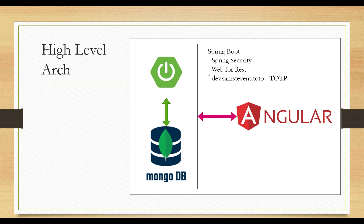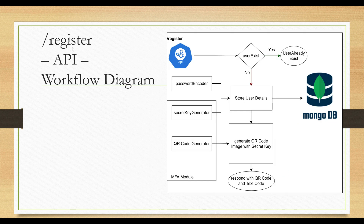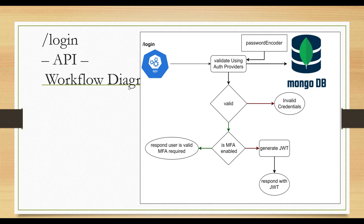We are going to use Spring Security and REST. Let's implement the REST API for register. The workflow is: when the register endpoint is called, we check whether the user already exists by username. If not, we encode the incoming password, generate a secret key required for QR code generation, store everything into MongoDB, and respond back to the user with the secret key for QR code generation.